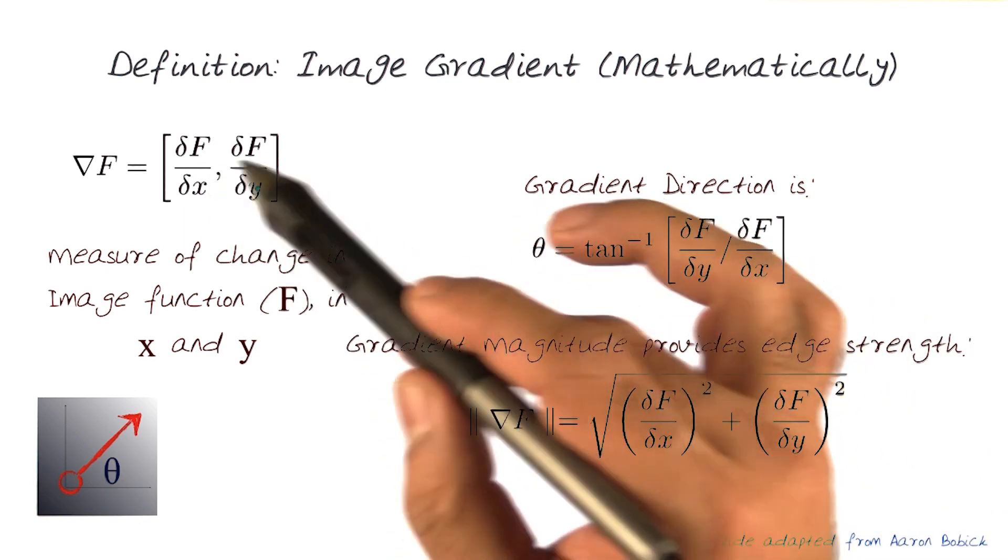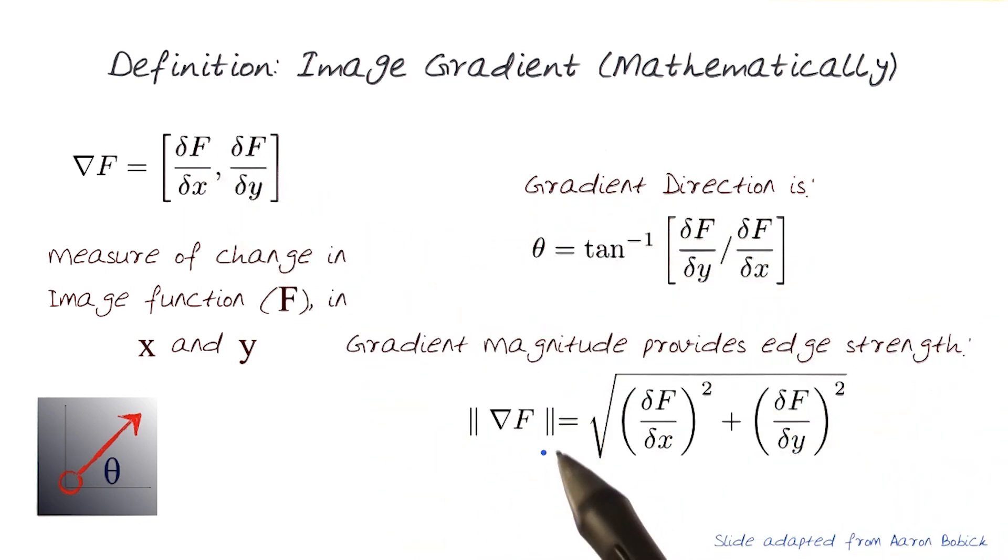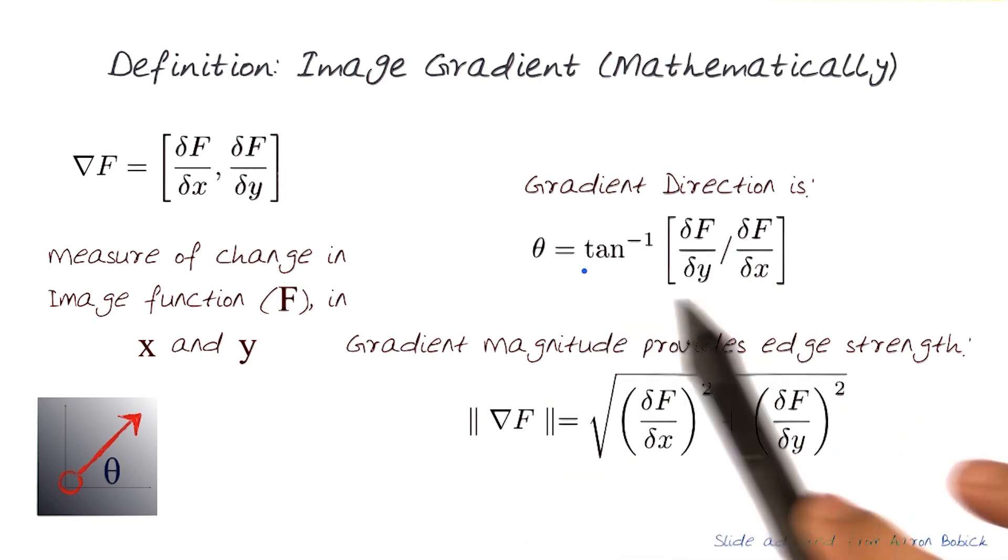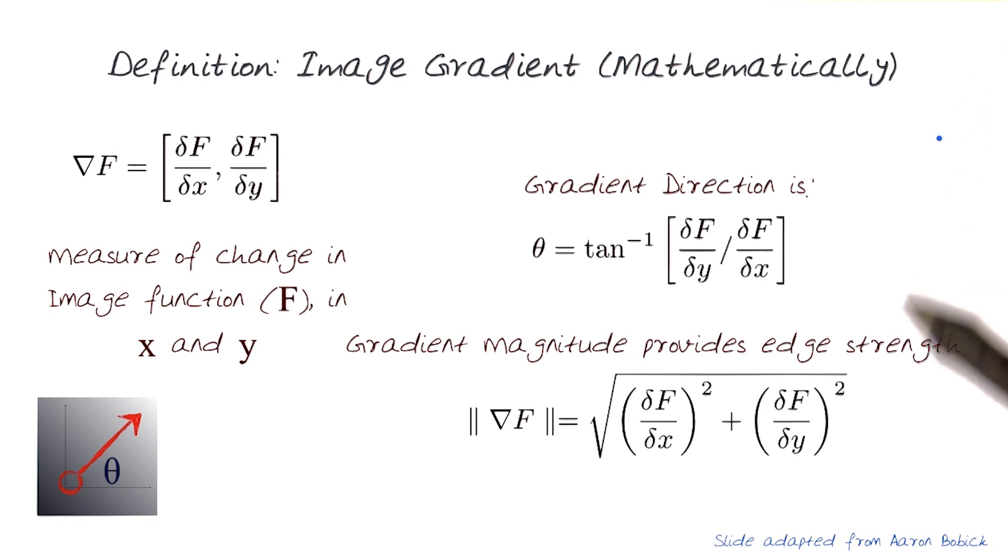The magnitude of this vector would, of course, be the modulus of this value here, which would be the square plus square, square root. So if I have this, it'll give me the magnitude of the vector. So the angle of the vector and the magnitude of the vector are the ones we're looking for. And that would basically define the gradient at any point in an image.